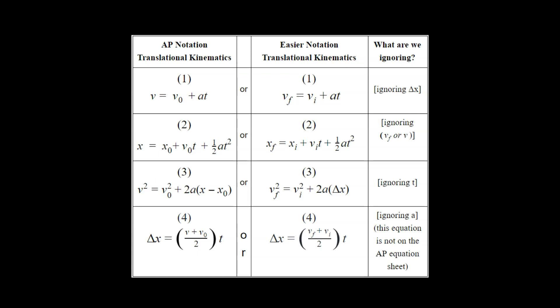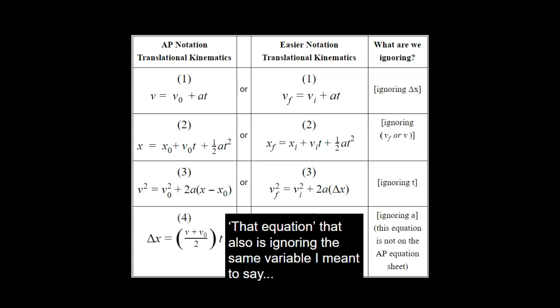So you start out by listing out what you know for the problem. Then you think about, all right, what am I ignoring? And I don't mean what am I solving for and don't have yet. I mean literally ignoring in the problem. And if you can find that, if you can find what the problem is ignoring out of these variables, then you can go ahead and say, I'm going to begin with that equation. And that's one way to do this.